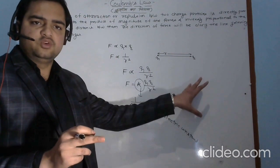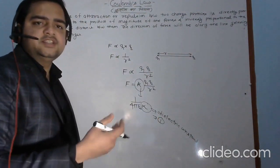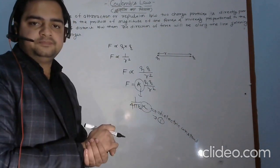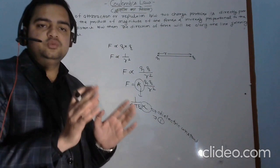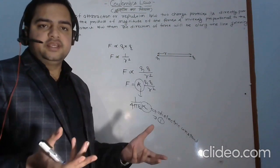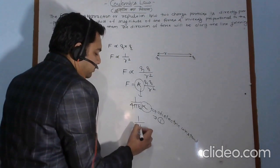For air or vacuum, it is simply taken as 1. For water, it is 80 to 81, and the value of k depends upon the nature of the medium. If we are assuming ideal situations that the medium between the charge particles is air or vacuum, then k will be 1, and the constant will be 1 upon 4 pi epsilon naught.